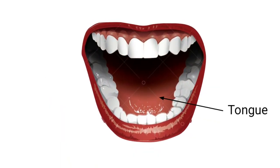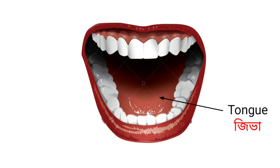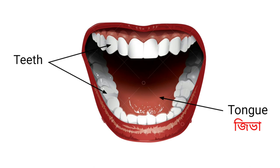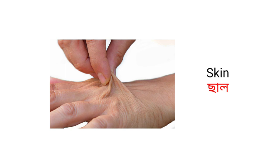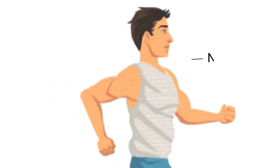Tongue — that means Jibha. Teeth — that means Dat. Gum — that means Datoralu. Skin — that means Saal. Neck — that means Dingyi.